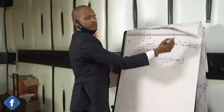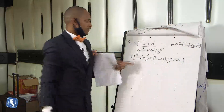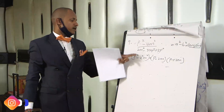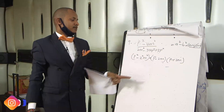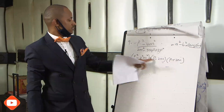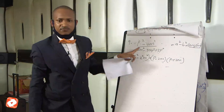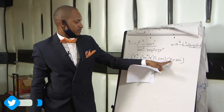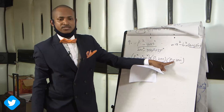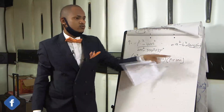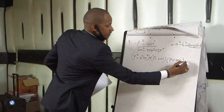A squared minus b squared is equal to a plus b into a minus b. Therefore, if you have p squared minus 2 squared m squared, you just collect p with 2m — there is a difference of two squares. You square it, but with a sign changed. That is p plus 2m and p minus 2m. So this is the numerator.